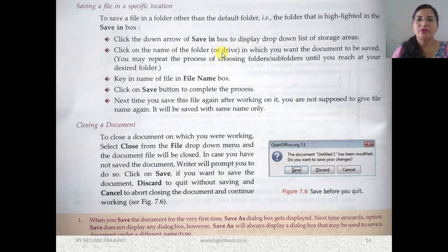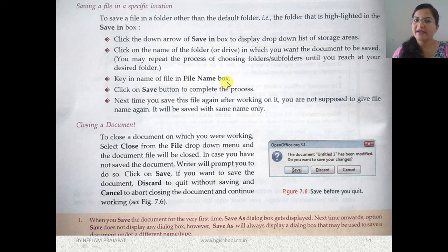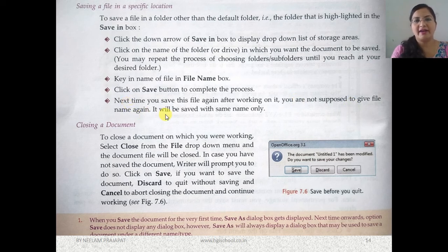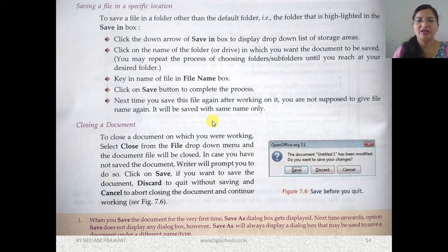Click on the name of the folder or drive where you want the document to be saved, type the file name in the File Name box, and then click the Save button to complete the process. The next time you save the file after working on it, you do not need to provide the file name again — it will automatically be saved with the same name.